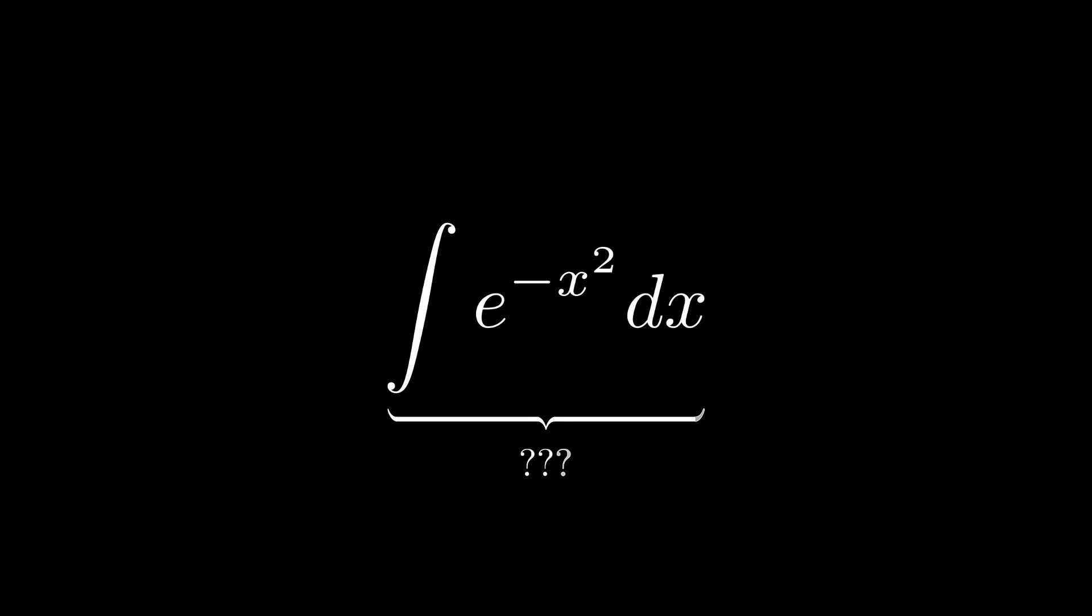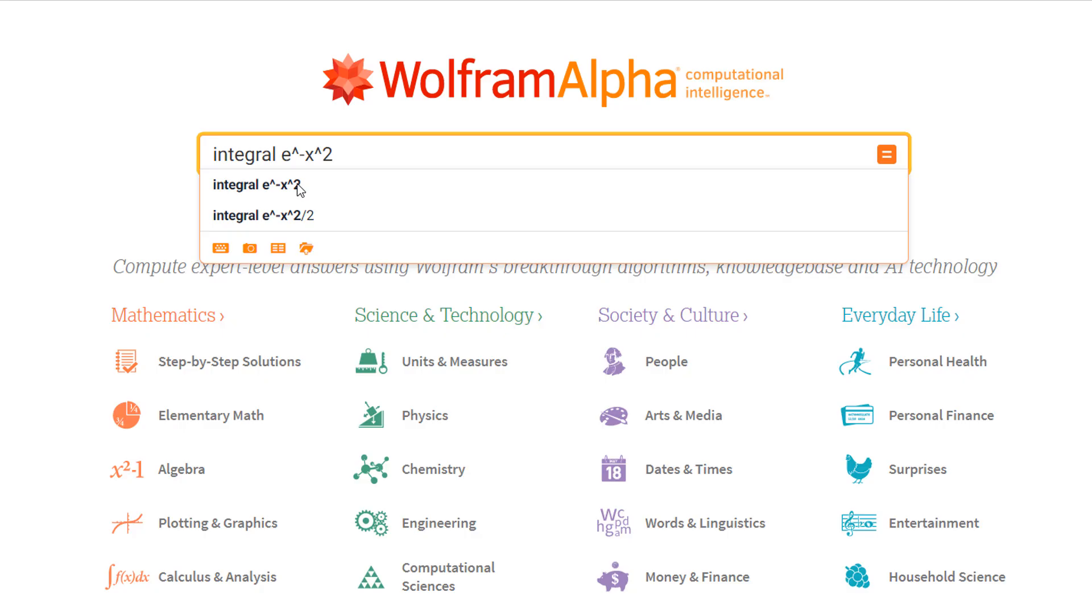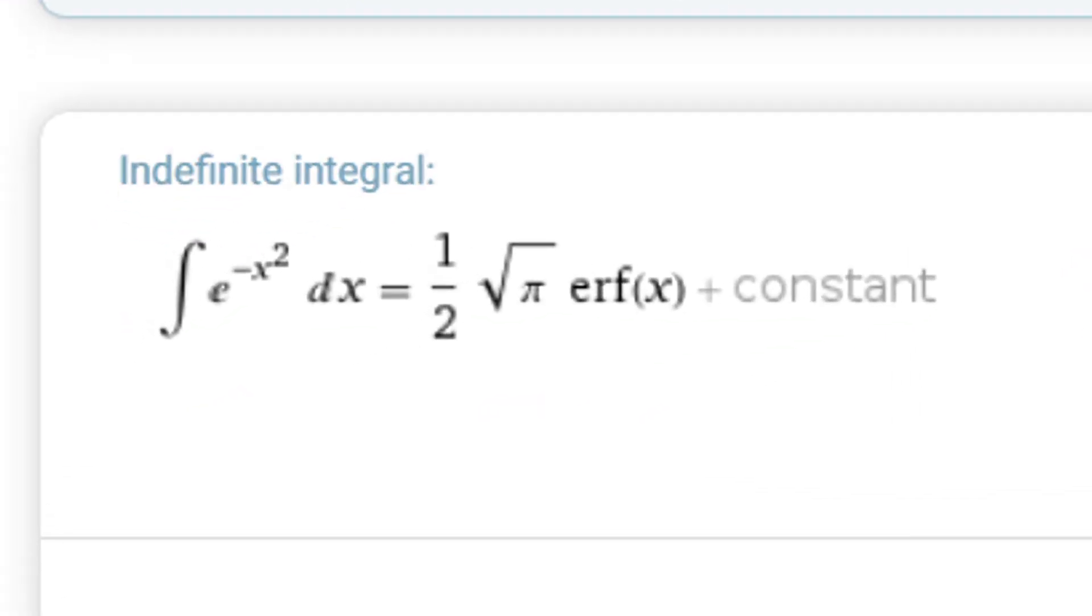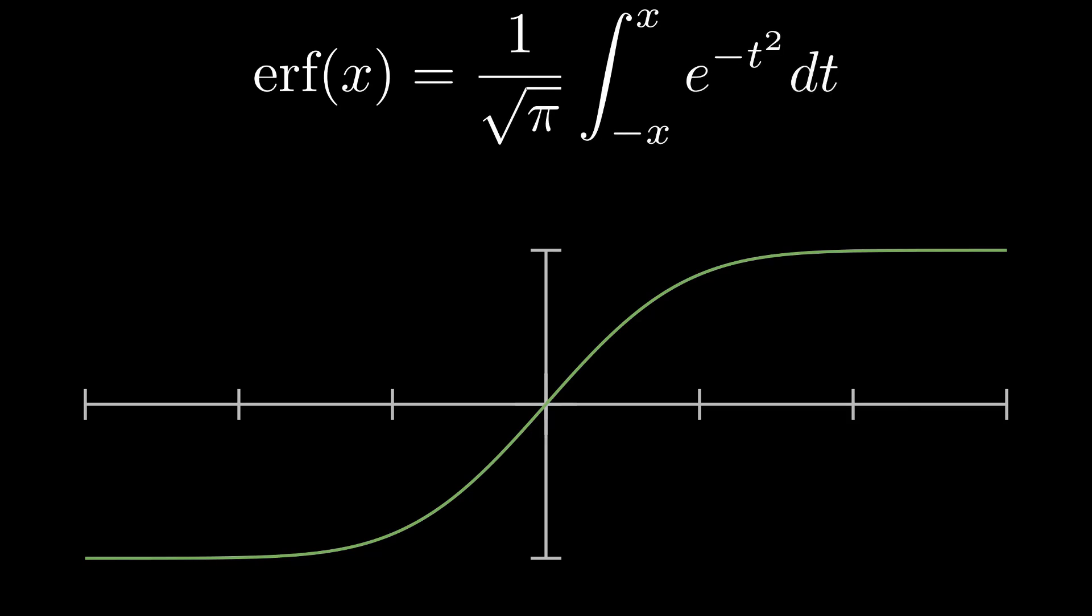But if we try to calculate the antiderivative of e to the negative x squared, it seems unexpectedly difficult. In fact, this integral is non-elementary, which means that it cannot be described algebraically. If we try to plug the integral of e to the negative x squared into something like Wolfram Alpha, we get something in terms of the error function, which although can be described, is far too complicated for us to deal with right now.